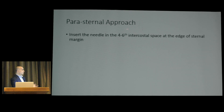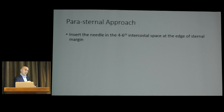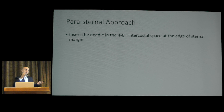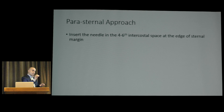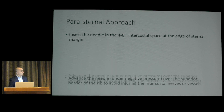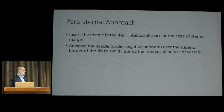For the parasternal approach, insert the needle between the fourth and fifth intercostal space at the edge of the sternal margin, no more than one centimeter lateral. You must demonstrate by echo at least four to five millimeters of pericardial space — critical when managing acute procedurally-induced tamponade, where as little as 100–150 cc can cause hypotension. Advance the needle under negative pressure over the superior border of the rib to avoid intercostal vessels and nerves.